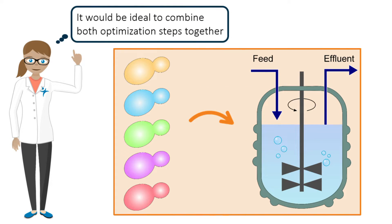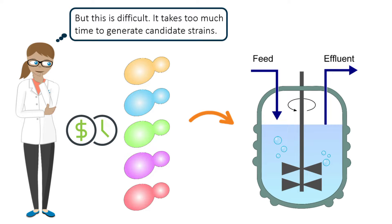It would have been ideal to combine both optimization steps at the genetic and environmental level together. However, it is difficult for Alex to attempt this strategy from the start because the time required to generate candidate strains far exceed the time needed to screen and test a large number of production parameters.